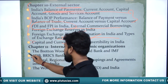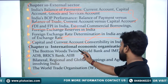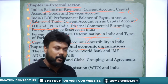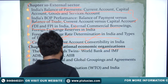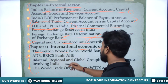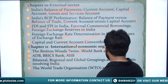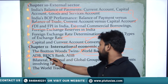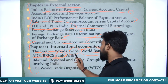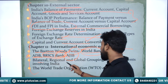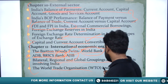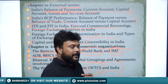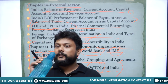Chapter eleven covers international economic organizations. One or two questions per year are asked solely from this area. We'll study starting from Bretton Woods, leading to the formation of the World Bank and IMF, Asian Development Bank, BRICS Bank, bilateral and regional groupings, and the World Trade Organization — especially India's relationship with WTO regarding agriculture commodities and other trade-related issues.